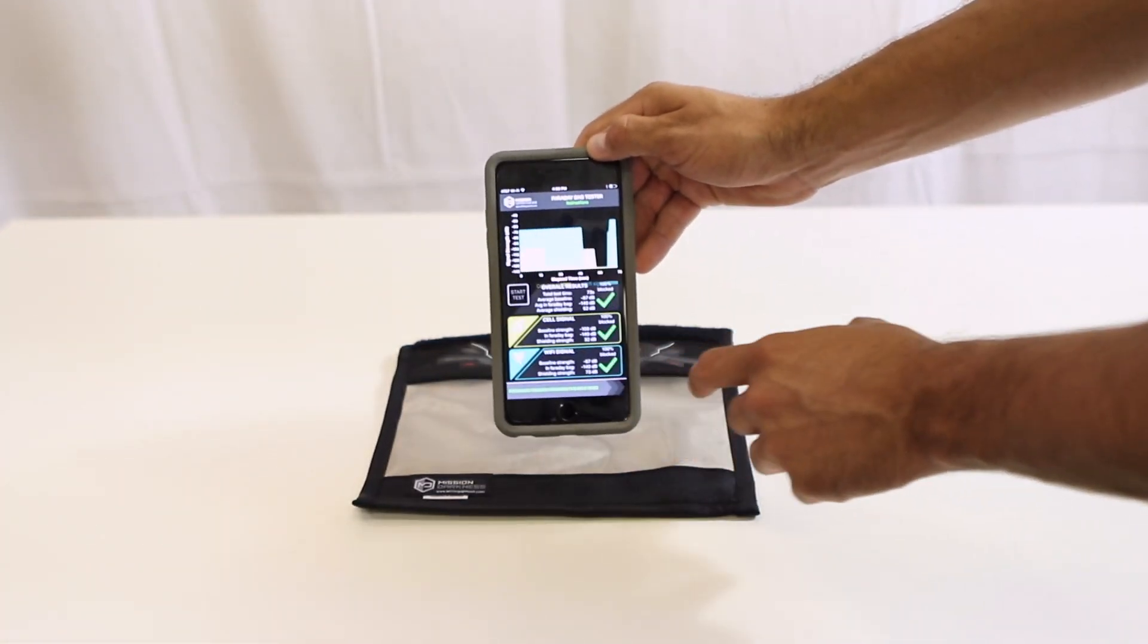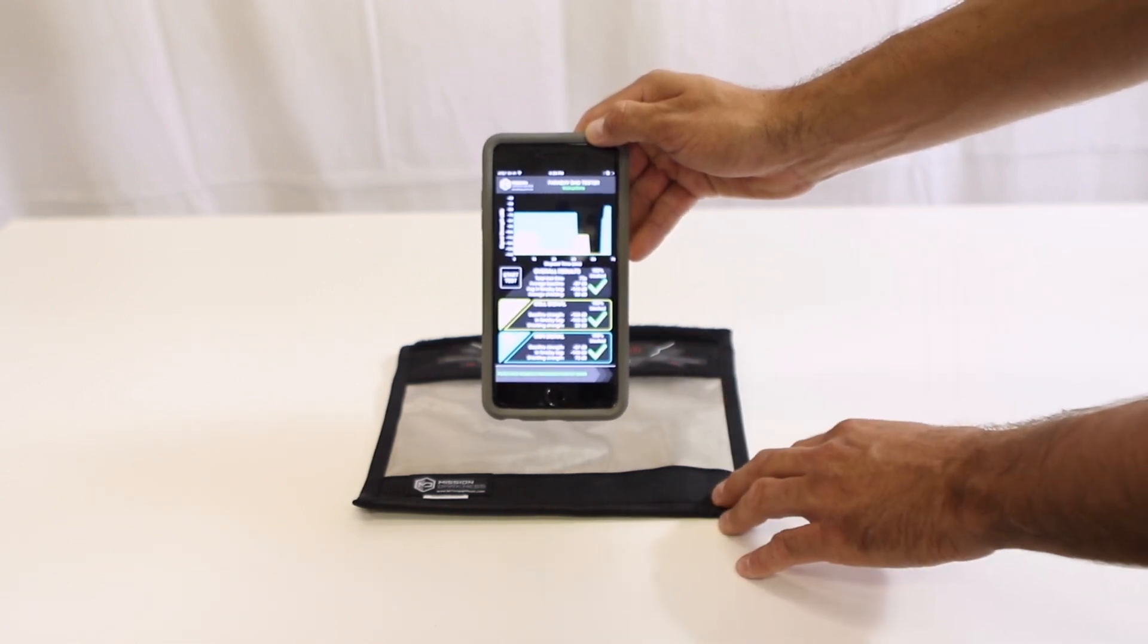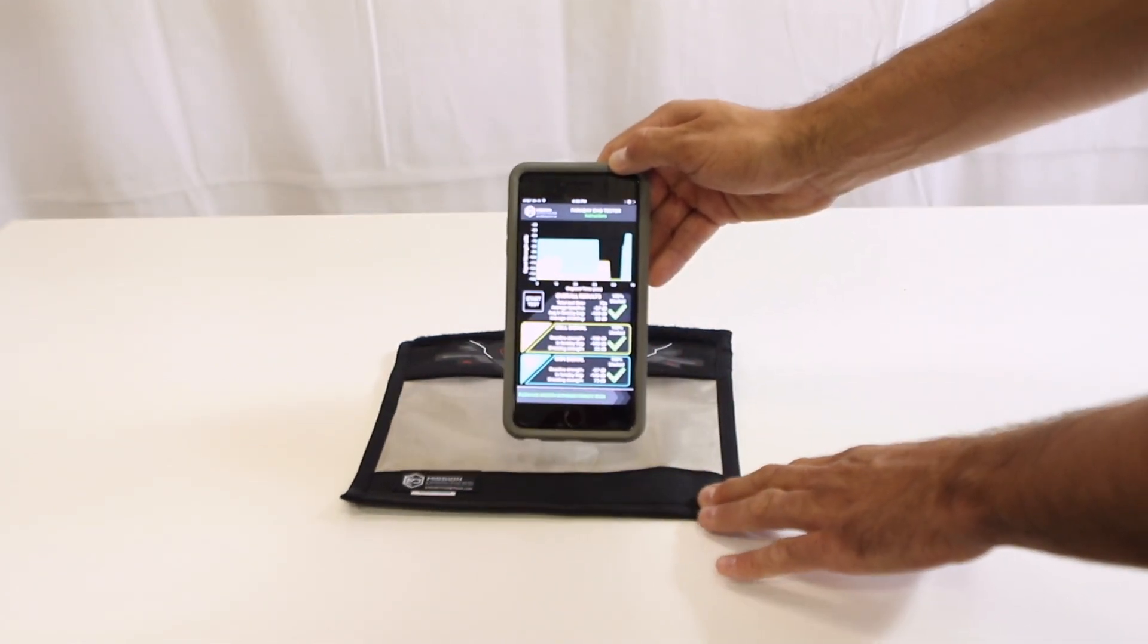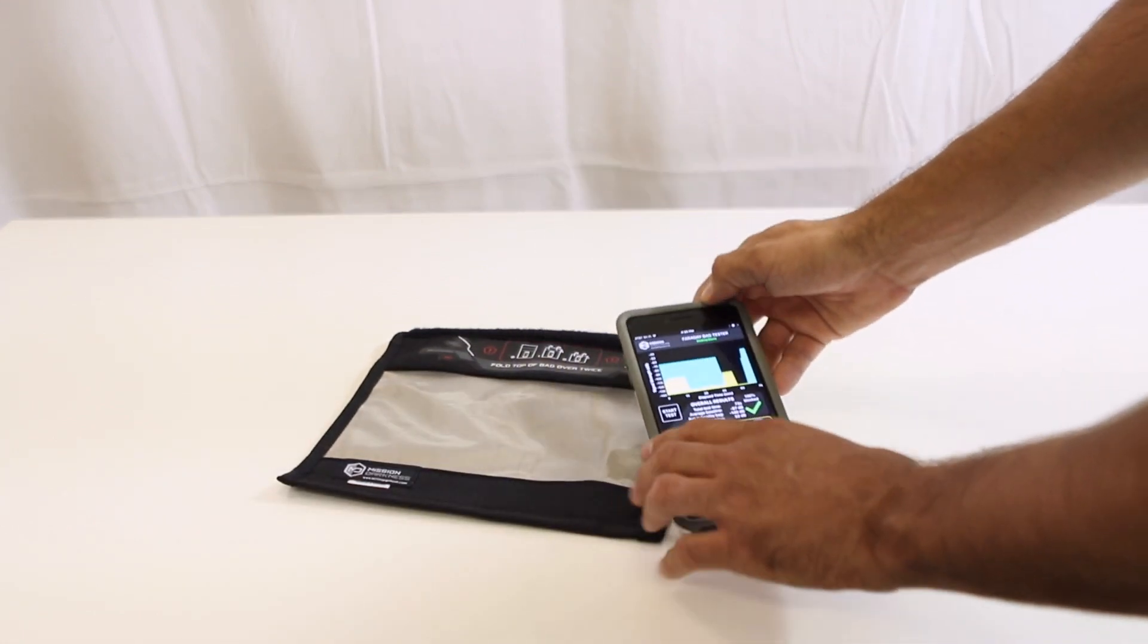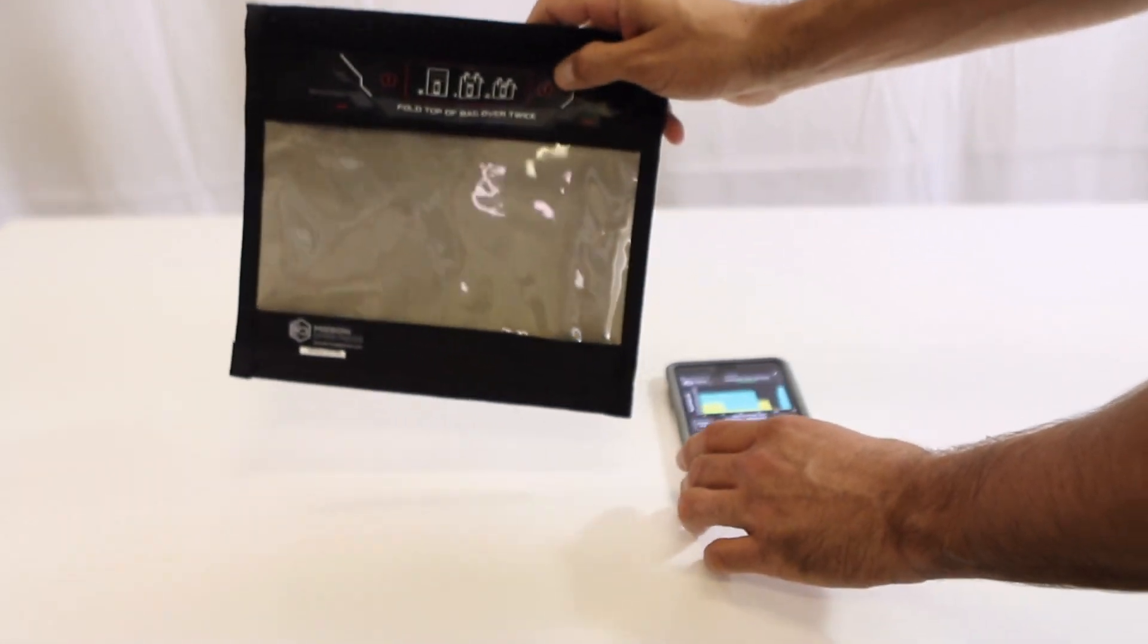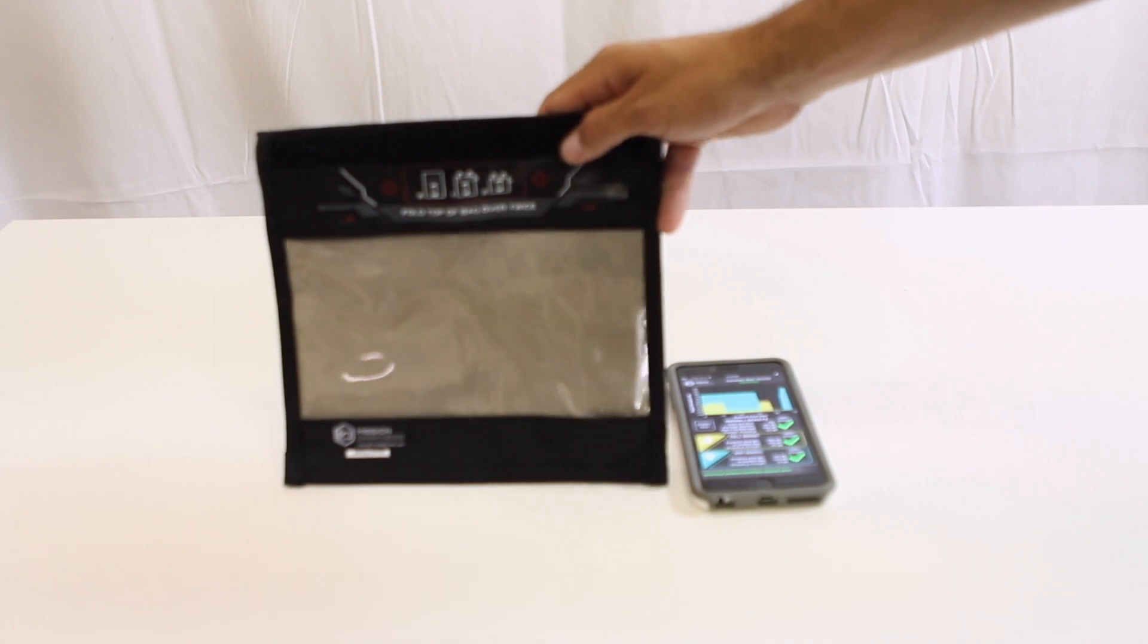Download the app. If you see green check marks all the way, you know the Faraday bag is working. If you see red X's, you know it's not. Mission Darkness window phone Faraday bag.